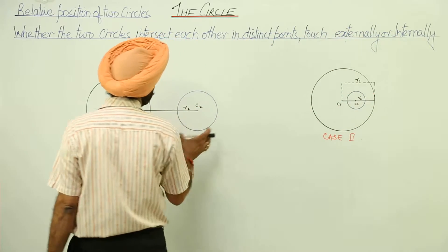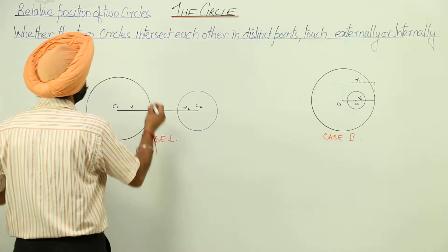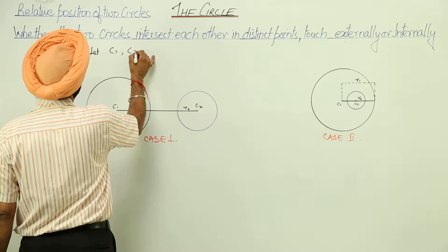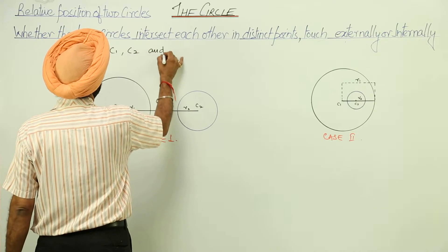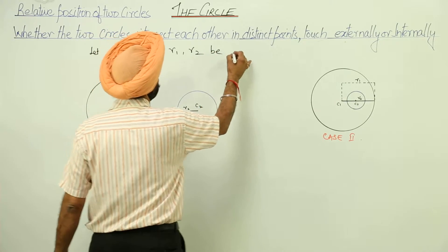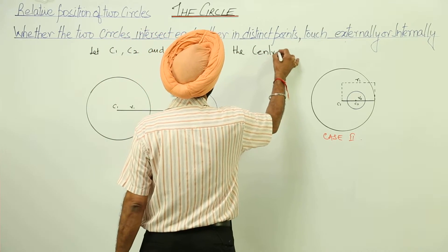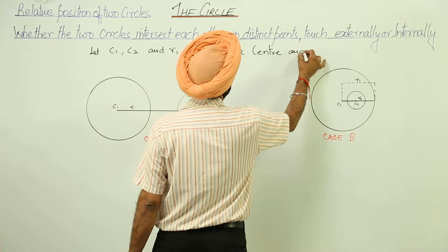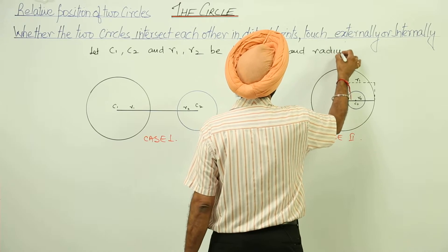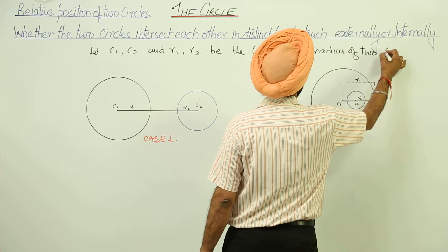We are having two figures here, case 1 and case 2. Let c1, c2 and r1, r2 be the center and radius of two circles.